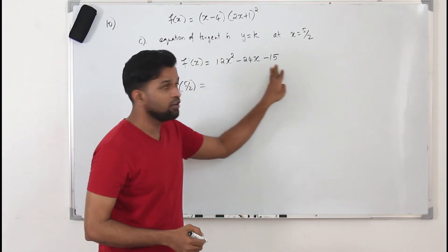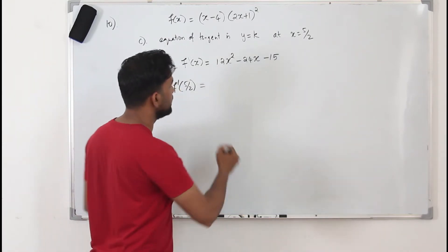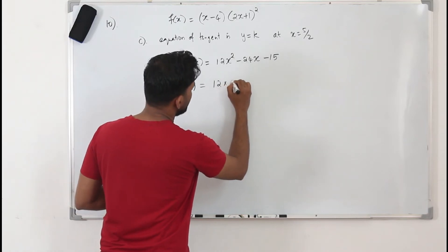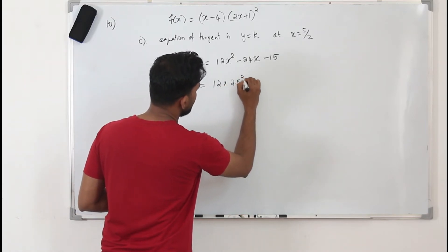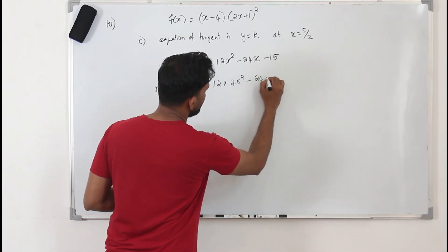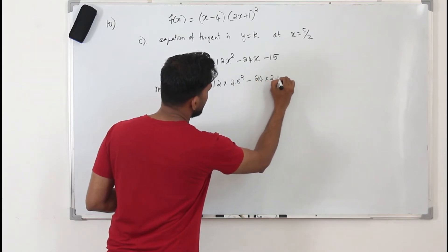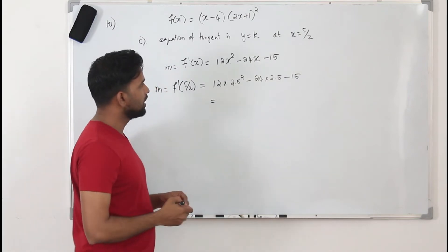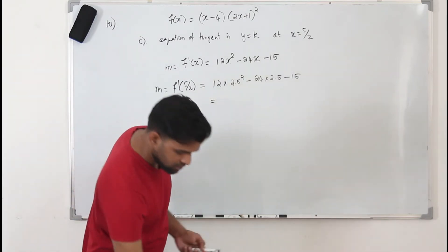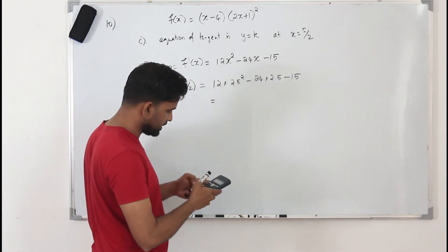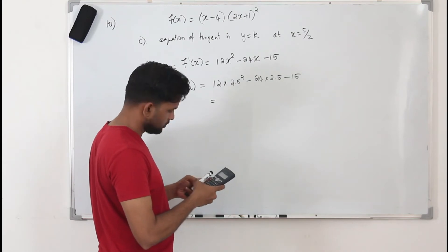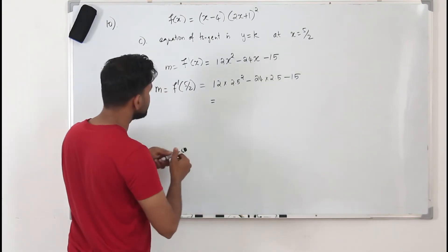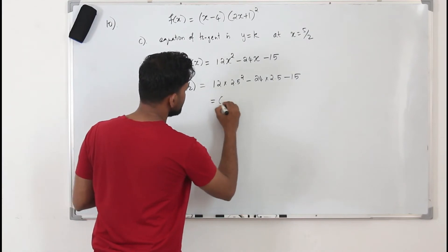Replacing x by 5/2: it will be 12 times (5/2)², which is 2.5 squared, minus 24 times 2.5 minus 15. Using a calculator, our answer is 0. So our slope is 0.